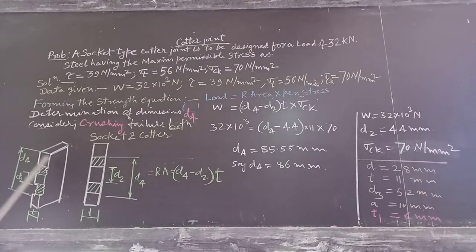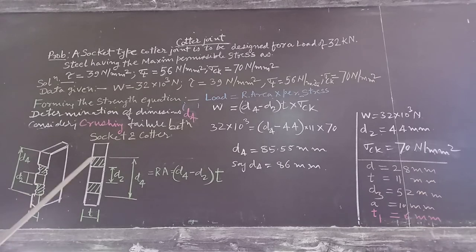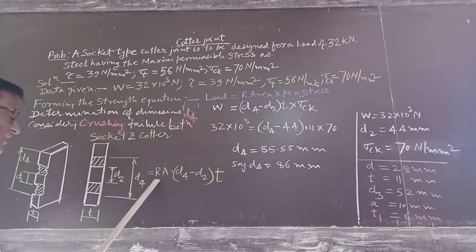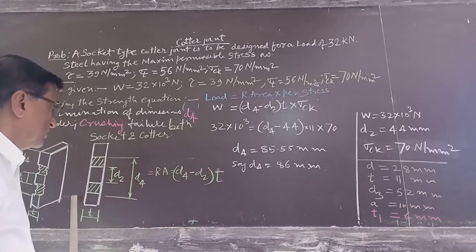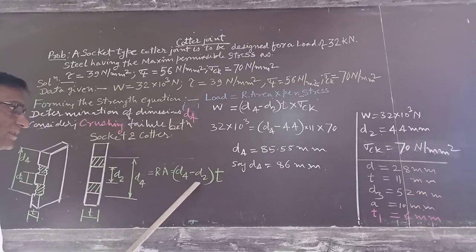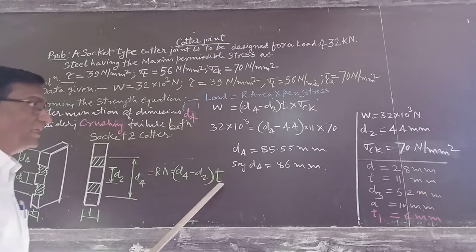This figure shows the crushing between the socket and the cotter. Looking from the front, the resisting or crushing area is given by: this is diameter D2, this is D4, and this is the thickness of the cotter. The resisting area will be (D4 minus D2) multiplied by T.